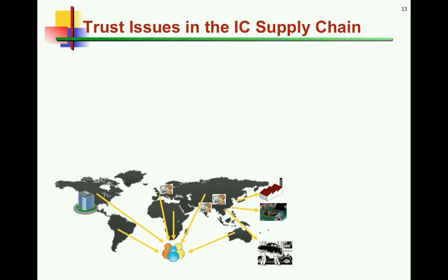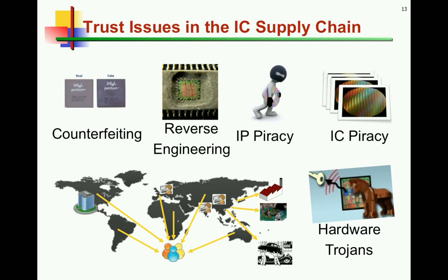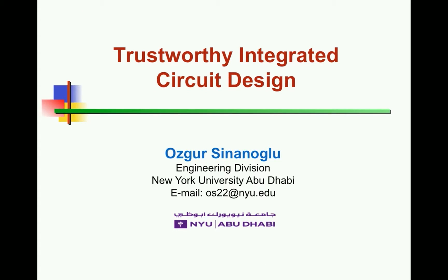To summarize: the design and manufacturing flow today is quite different from 20-30 years ago. Designs are much more complex and the cost of owning a fab is in the order of billions, so more design companies use third-party IP blocks and outsource fabrication. This distributed IC supply chain has given rise to concerns from counterfeiting and reverse engineering to hardware Trojans — and depending on the business model, different companies and agencies will emphasize different concerns. Thank you very much for listening; this concludes the first module of our presentation.